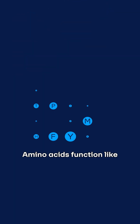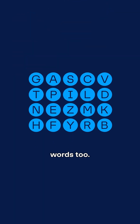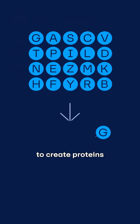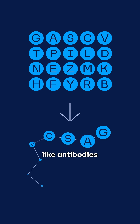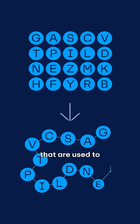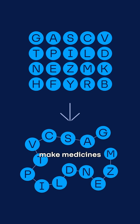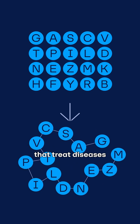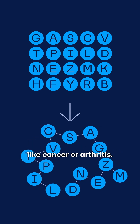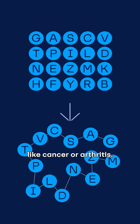Amino acids function like words too. They are combined to create proteins like antibodies that are used to make medicines that treat diseases like cancer or arthritis.